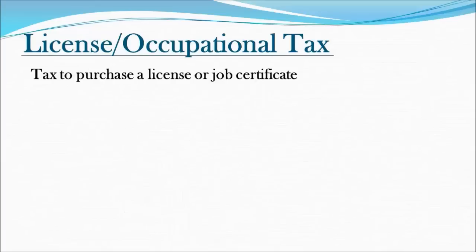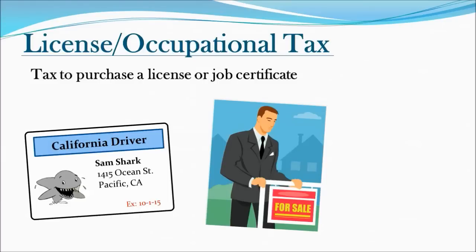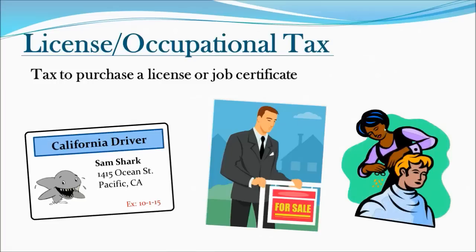Our final one is the license and occupational tax — fees placed on licenses or certificates issued by the government. Almost every American will have to pay these at some point. Examples include a driver's license or ID card, a real estate license, a teaching credential, or a cosmetology license. Essentially, you are paying the government a tax in return for a certificate that allows you to drive or work in a certain occupation. Rates usually depend on the state and typically run $100 or less.